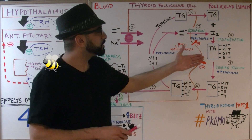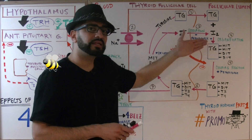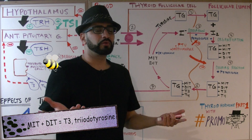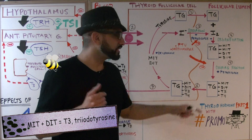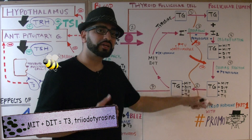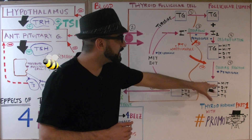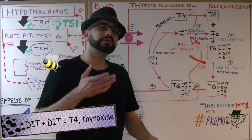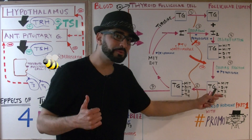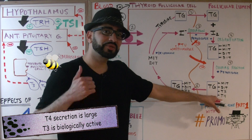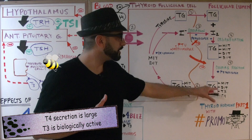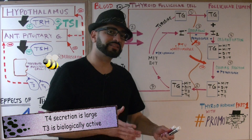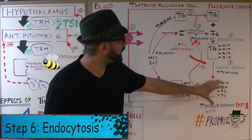What does the coupling reaction actually mean? We've already created an MIT and a DIT. If an MIT and a DIT come together, we form T3 — triiodothyronine. If a DIT and a DIT come together, we call it T4 — thyroxine. T4 is secreted in large quantities compared to T3; however, T3 is the biologically active molecule.